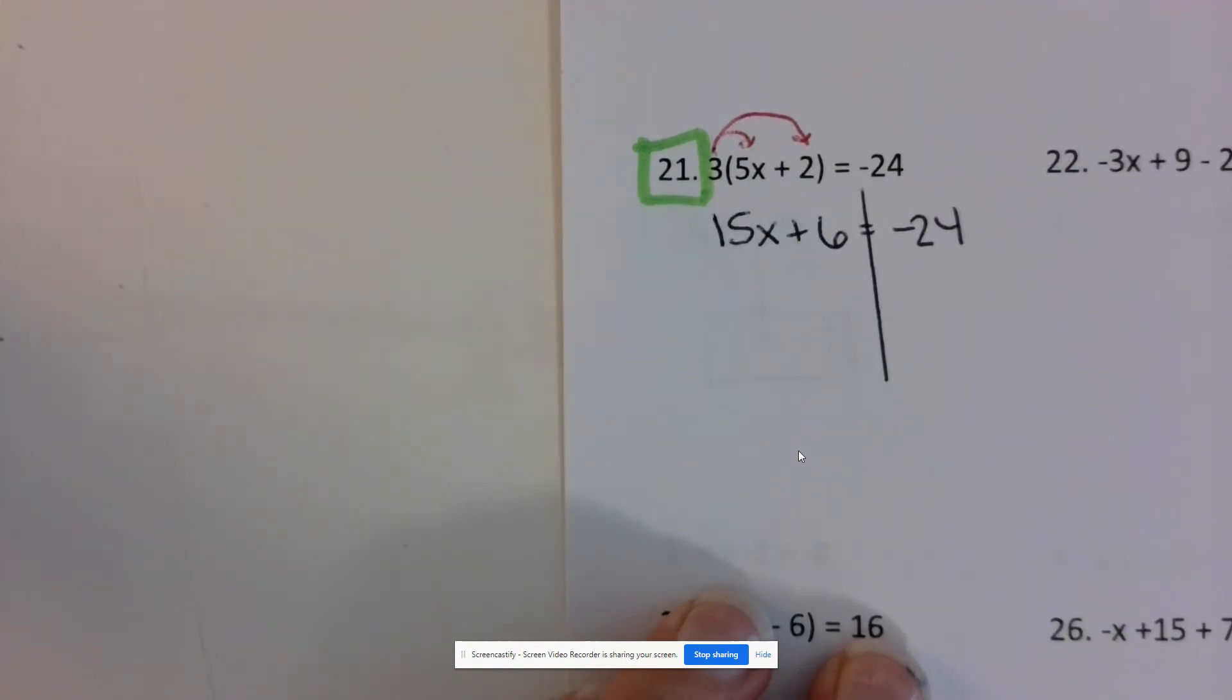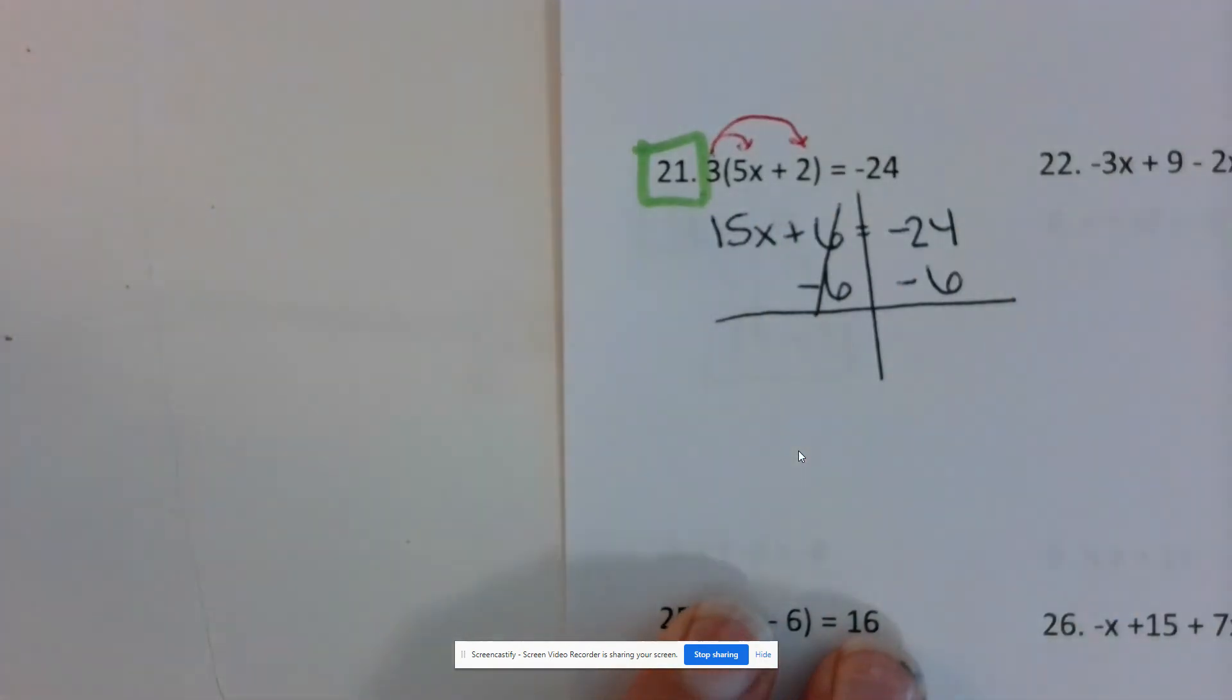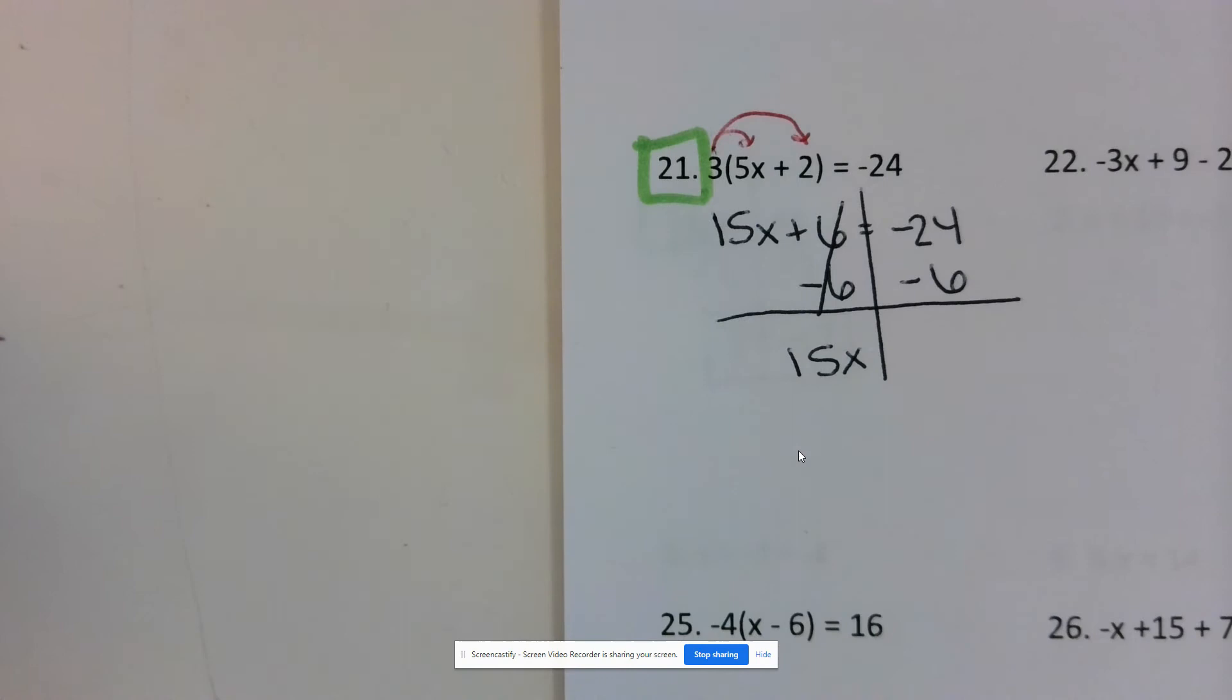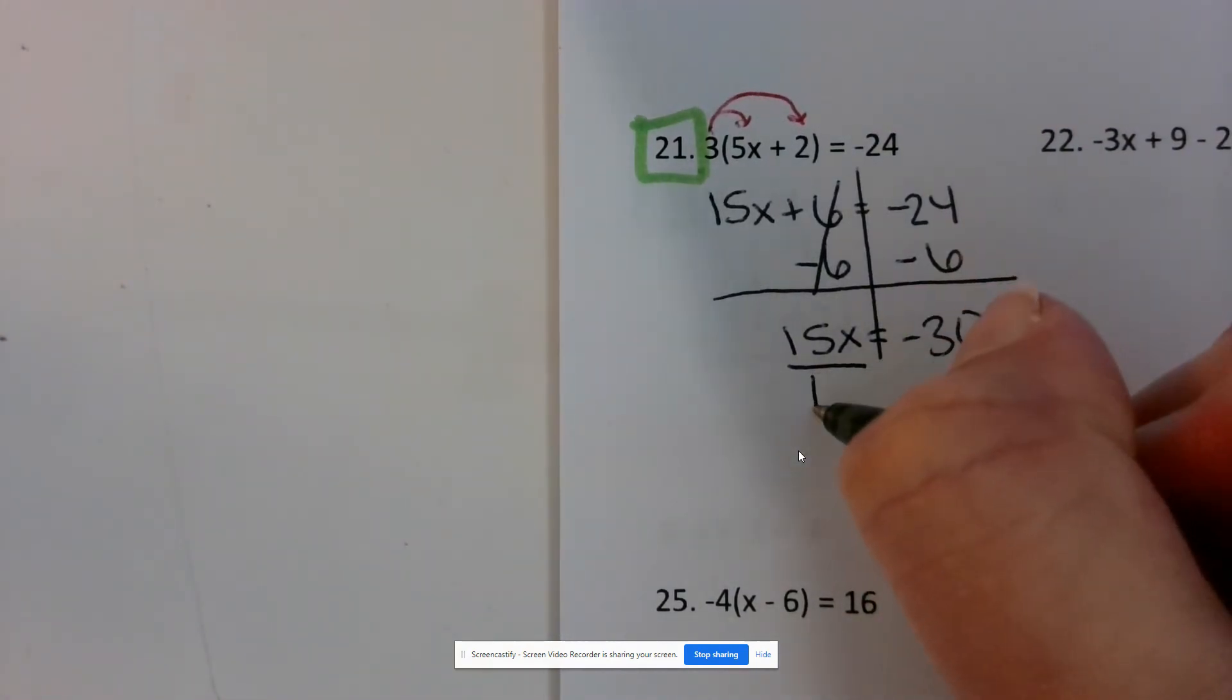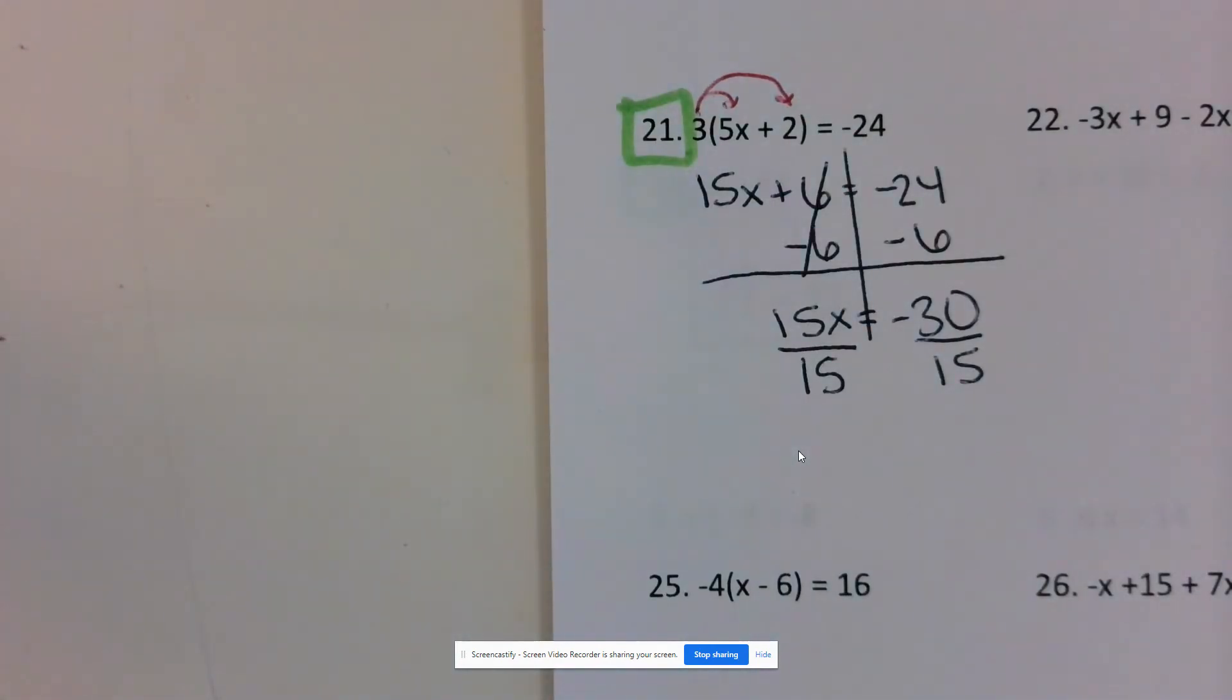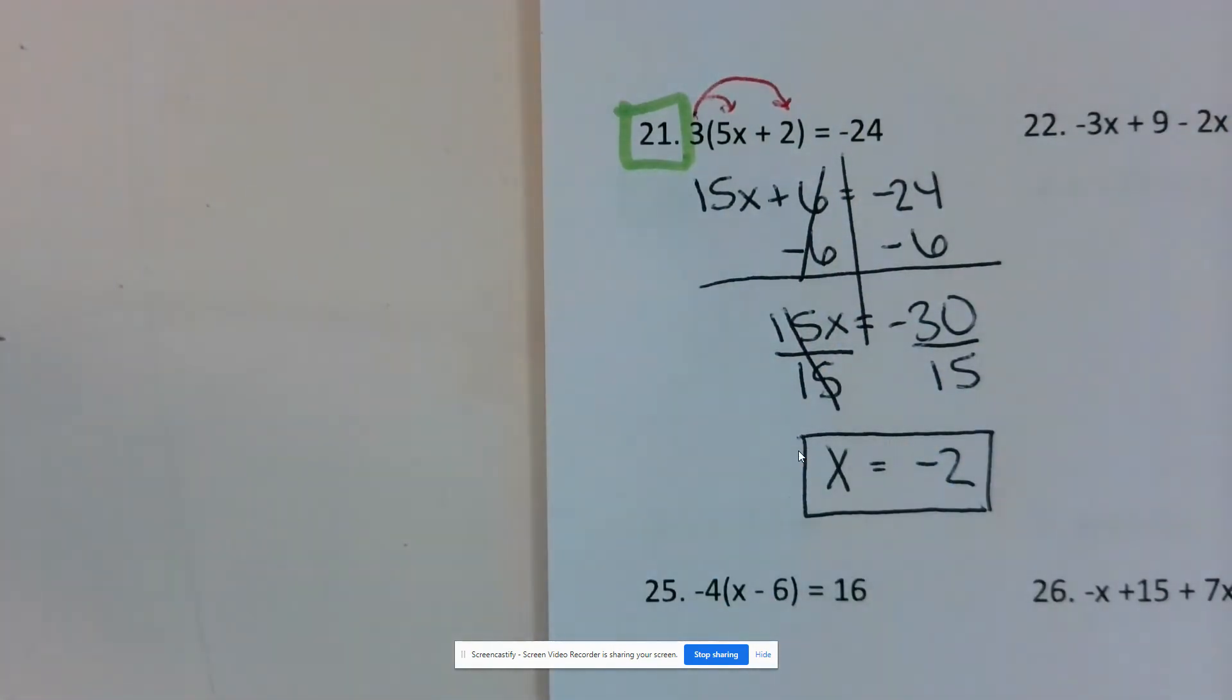I need to get rid of the 15 and the 6. I'm going to start by subtracting 6 first. I need to get rid of this 6 that's being added. This leaves me with 15x on the left side of my equation. What I do to one side, I do to the other. On the right side, this leaves me with negative 30. Now I need to undo this 15 that's being multiplied by x by dividing both sides by 15. Negative 30 divided by 15 is negative 2.